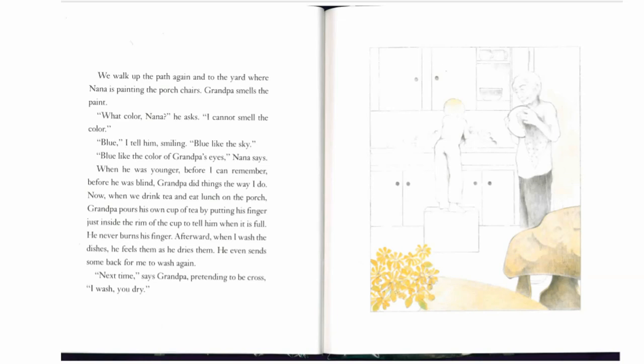When he was younger, before I can remember, before he was blind, grandpa did things the way I do. Now when we drink tea and eat lunch on the porch, grandpa pours his own cup of tea by putting his finger just inside the rim of the cup to tell him when it's full. He never burns his finger. Afterward, when I wash the dishes, he feels them as he dries them. He even sends some back to me to wash again. Next time, says grandpa, pretending to be cross, I wash, you dry.